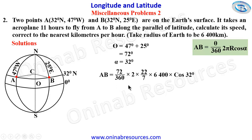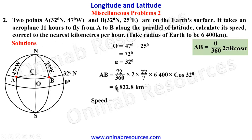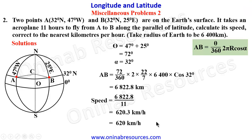Entering this into the calculator, the distance AB = 6,822.8 kilometers. Speed = distance ÷ time = 6,822.8 ÷ 11 = 620.3 kilometers per hour. To the nearest kilometer per hour, the speed is 620 kilometers per hour. That's all for the solution of problem two.